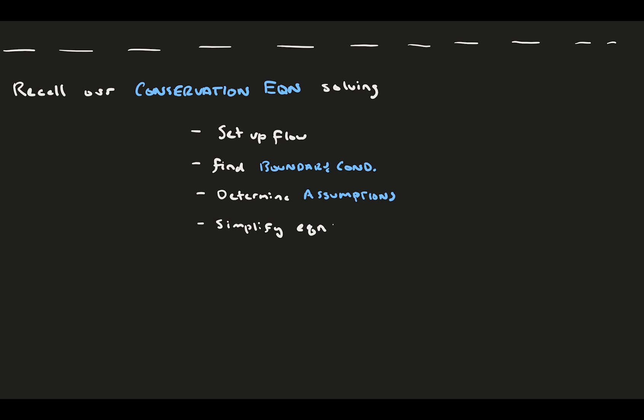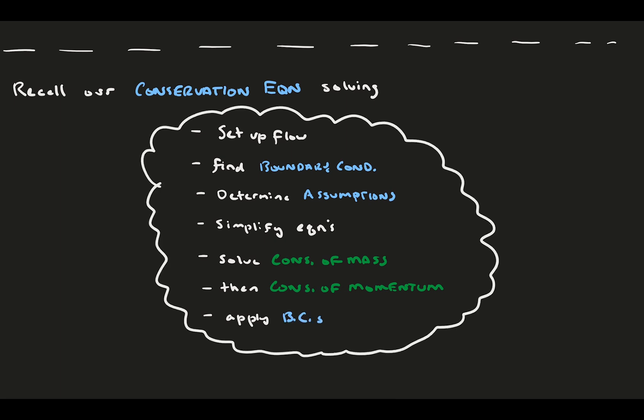Then, we simplified our equations with the assumptions. The first equation you work with is conservation of mass, which usually lets you solve for one of the velocity components. After was the conservation of momentum in the x-direction, which gave us the other velocity. In order to solve for the velocity functions, we needed to apply our boundary conditions to the equations.